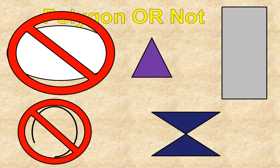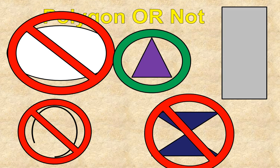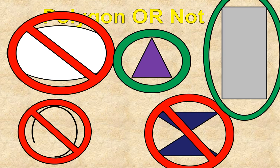The third shape that is not a polygon is the dark blue figure in the lower central part. This is not a polygon because the sides cross. If it were two separate triangles, they would each be polygons, but as a single figure with crossing sides, it is not. That leaves us with two polygons: the purple triangle in the middle and the gray rectangle — both have straight edges, no openings, and no crossing edges.